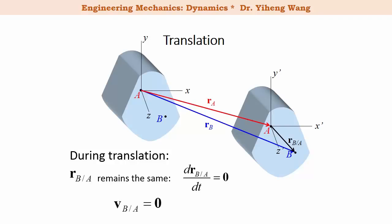And the relative velocity of point B is also zero, the relative acceleration of point B is also zero. This means that for any two arbitrary points on the rigid body undergoing translation, the two points will always have the same velocity and acceleration.